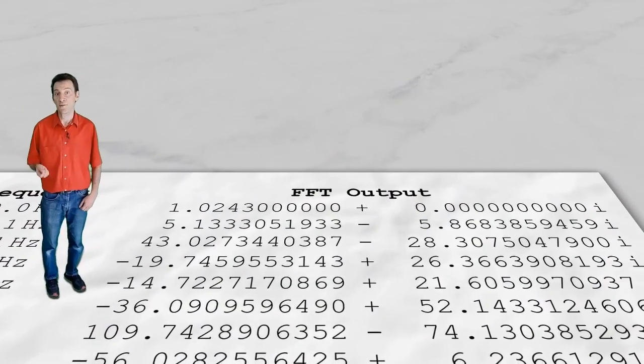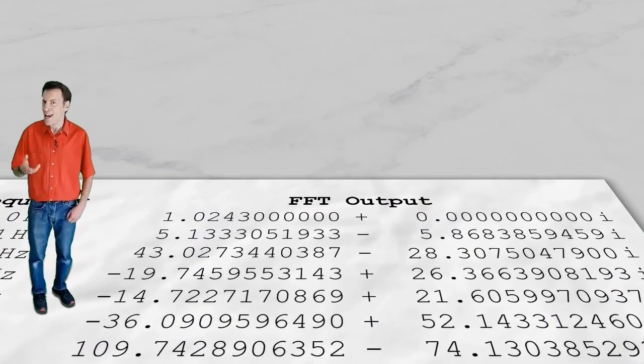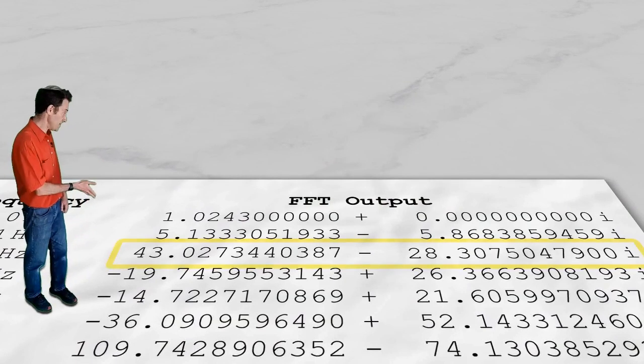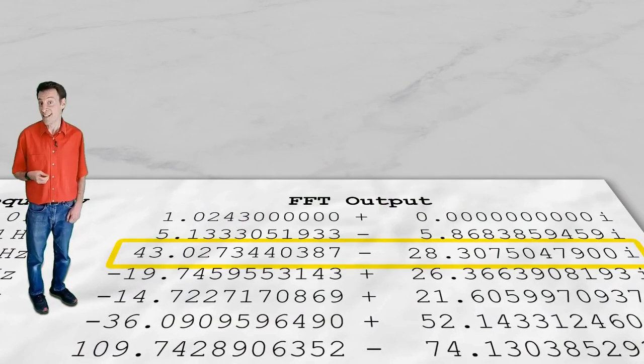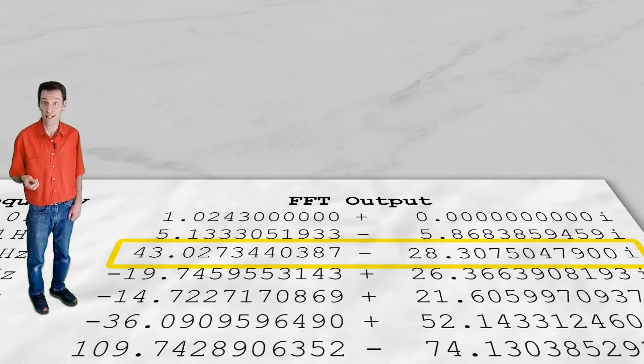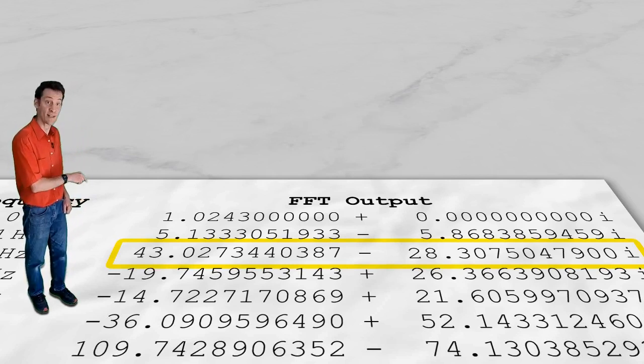Now that we know how sines and cosines are linked to triangles, let's randomly choose one of the items in the FFT output list, and use it as an example of how to calculate the magnitude and phase of the sinusoid it represents.